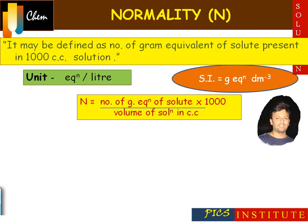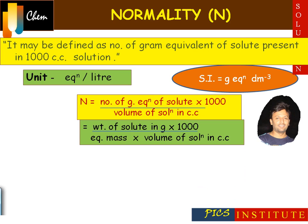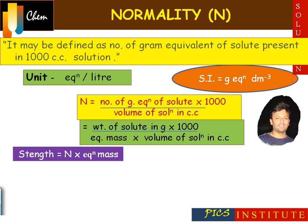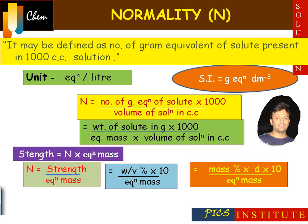The formula for normality is: number of gram equivalents divided by volume of solution in cc, multiplied by 1000. Another formula: weight of solute in grams divided by equivalent mass, divided by volume of solution in cc, multiplied by 1000. Since strength equals normality multiplied by equivalent mass, normality equals strength divided by equivalent mass. Using percentage strength, normality equals weight-by-volume percentage multiplied by 10, divided by equivalent mass. In the case of mass percentage, normality equals mass percentage multiplied by density multiplied by 10, divided by equivalent mass.